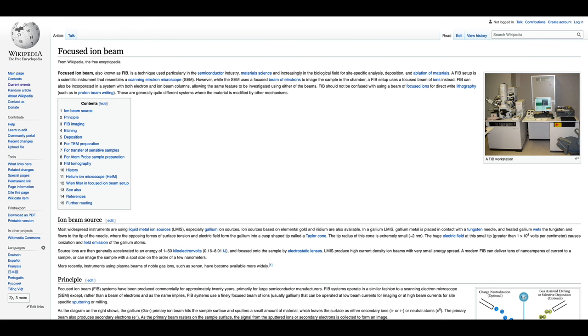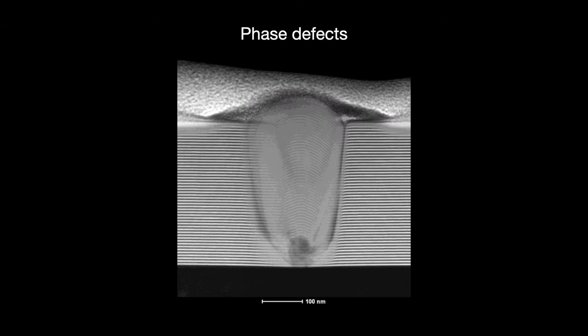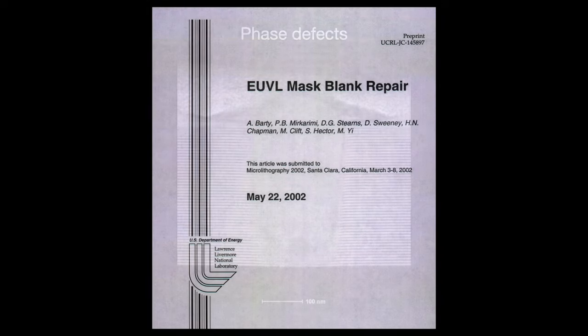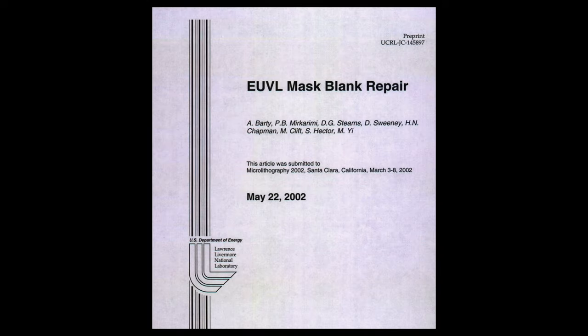Phase defects start on the substrate, at the bottom of the mirror layer stack. These are far more challenging to fix and they haven't really come across a good method yet. I read a study published in 2002 where they tried banging a phase defect's bump back down. It sounds like something out of a Saturday morning cartoon and as expected, it did not really work.